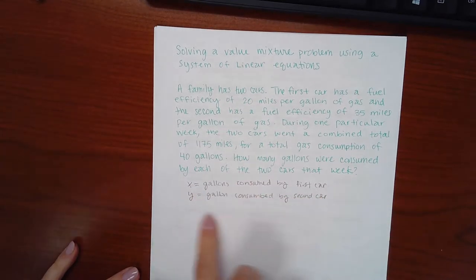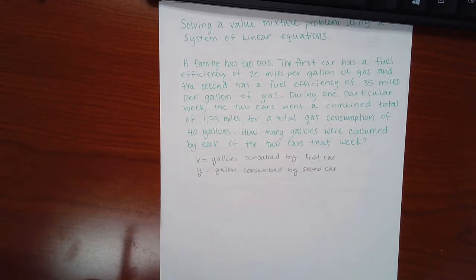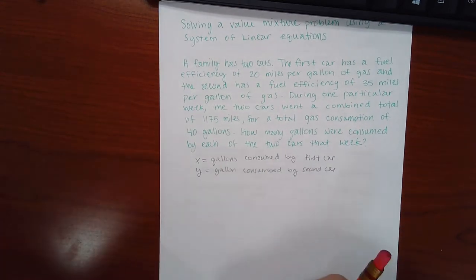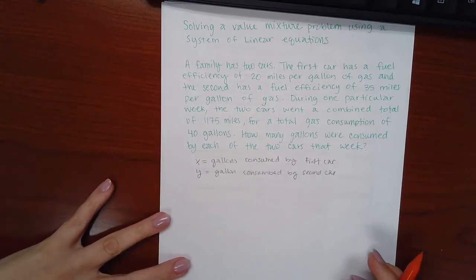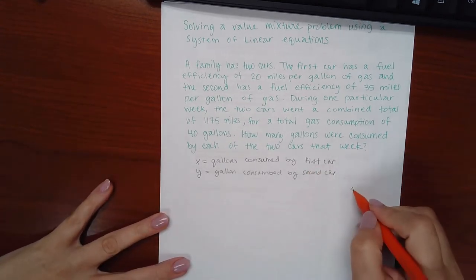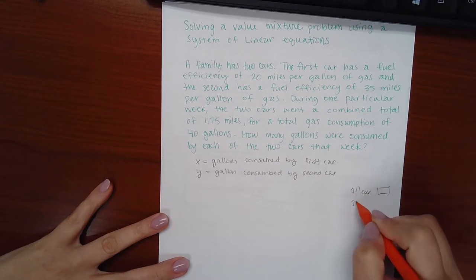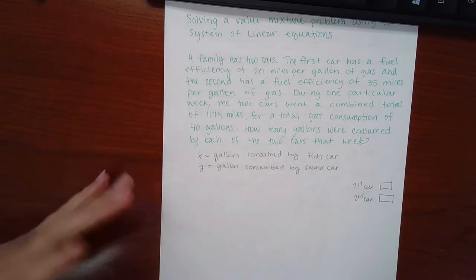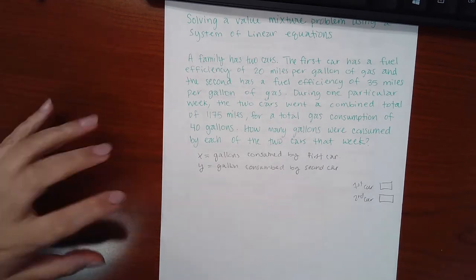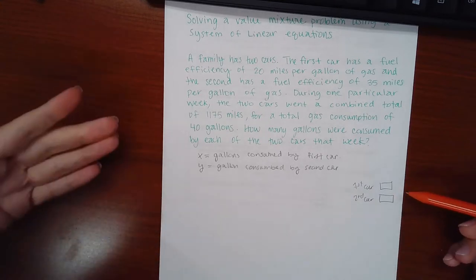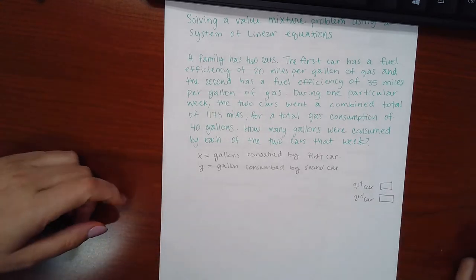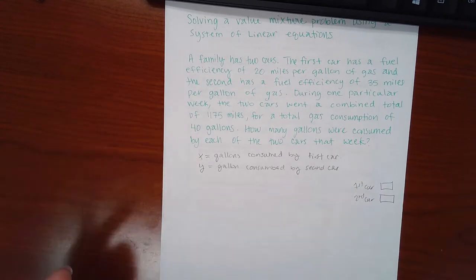Now most people make a mental note of this and they don't write it down. However, it's important to write it down because once you're done solving the system, you'll have an x value and a y value, and you'll know which number to plug in which box. You very well could have the correct numbers but put them in the wrong boxes. So it's very important that you tell yourself what x is representing and what y is representing.